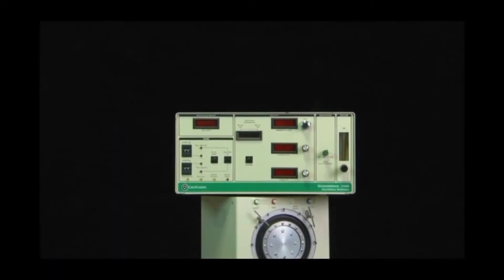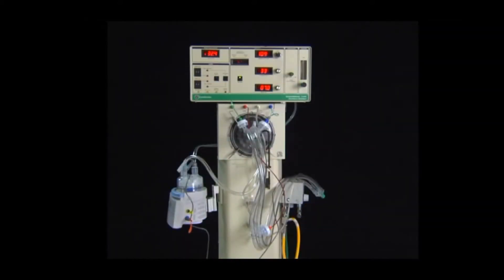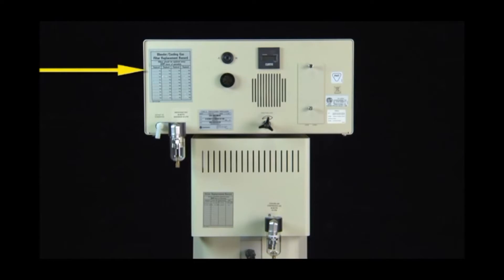The 3100B is comprised of two parts, the head and the ventilator body. On the back panel, the blender cooling gas filter replacement record and the driver replacement record are provided to assist service personnel in the proper maintenance of the ventilator.